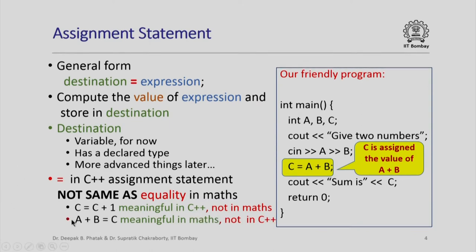However, C = C plus 1 is not a meaningful statement in maths because for every value of C, C cannot equal C plus 1. Similarly, the mathematical equality A plus B equals C is perfectly meaningful in maths, but it is not a meaningful statement in C++ because the destination of an assignment statement in C++ must be a variable.